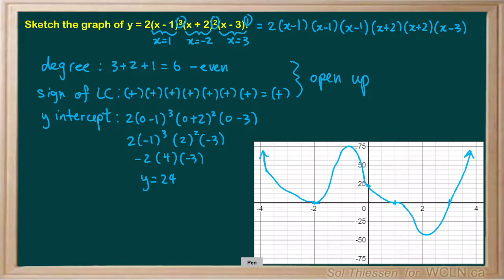You may not get the exact peak placement on your own — whether the peak happens before or after the y-intercept requires more calculus to determine precisely. As long as your sketch has the correct end behavior (starts up and ends up), all roots correct with the right behavior at each: a bounce at x equals negative 2, a flatten-out before crossing at x equals 1, and a straight cross at x equals 3 since that root has multiplicity 1, plus the correct y-intercept of 24 — then you've done a good job and should give yourself the mark.